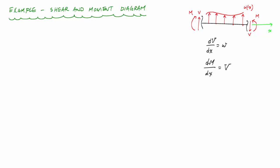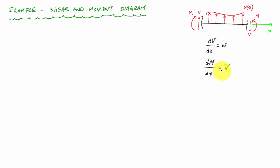As a reminder for shear and moment diagrams, I have my positive sign convention over here on the right. Below it, I have the two primary relationships needed to draw shear and moment diagrams. dV/dx equals w — the slope of the shear diagram equals the value of the distributed load at a point. Rearranged as an integral, the change in shear equals the area under the distributed load. Similarly, dM/dx equals the shear, meaning the slope of the moment diagram equals the shear at a specific point. Rearranged, the change in moment equals the area under the shear diagram.